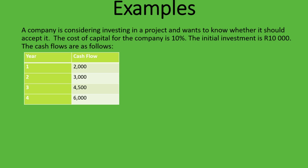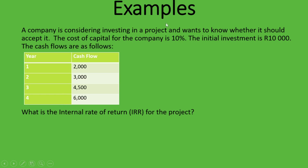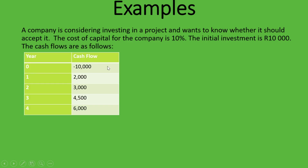Here's the first example. A company is considering investing in a project and wants to know whether to accept it. The cost of capital is 10%, the initial investment is 10,000 rand, and cash flows are given from year one to year four. We're asked for the IRR. Step one is to calculate the NPV using the required rate of return of 10%. I add year zero as a negative 10,000 — the initial investment is always negative.